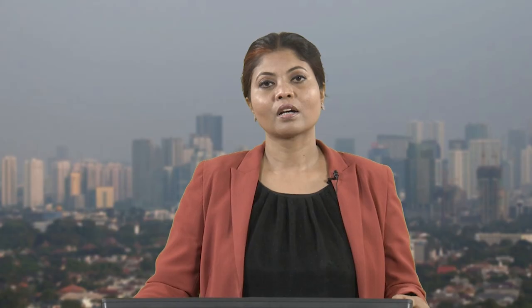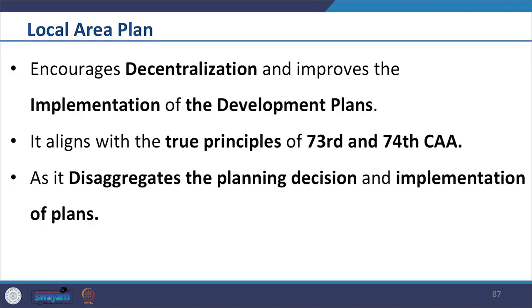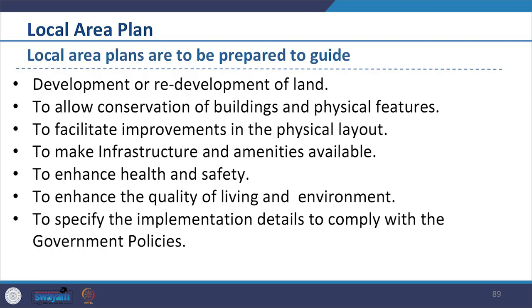We shall now see the local area plan. The local area plan is considered very important because it encourages decentralization and improves the implementation of the development plan on the ground. It also aligns well with the principles of the 73rd and 74th Constitutional Amendment Act, as it disaggregates planning decisions and brings the process closer to the people. Local area plans are prepared to guide development or redevelopment of land, allow conservation of buildings and physical local features, provide improvements in physical layout, and make infrastructure and amenities available.